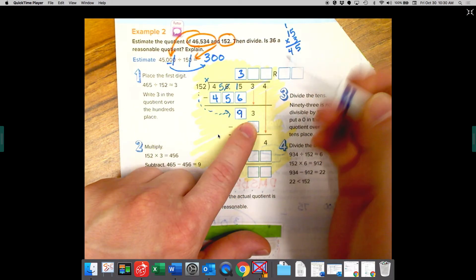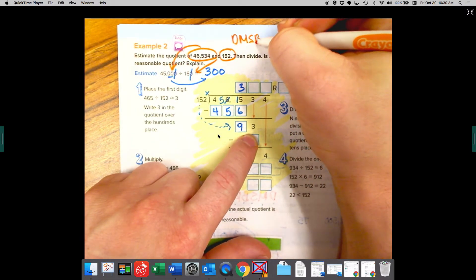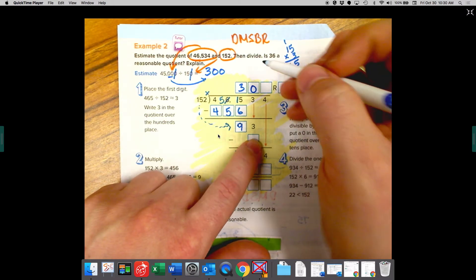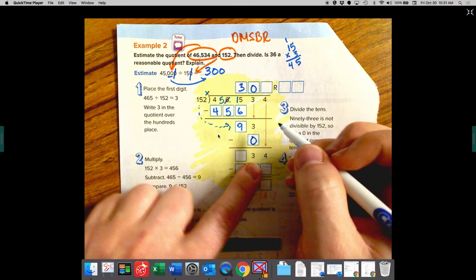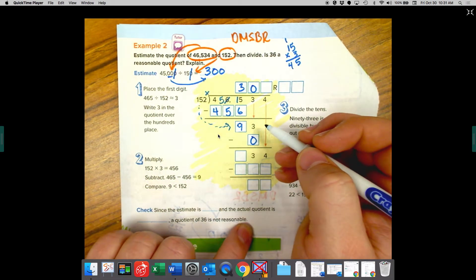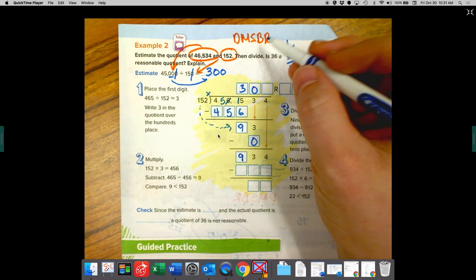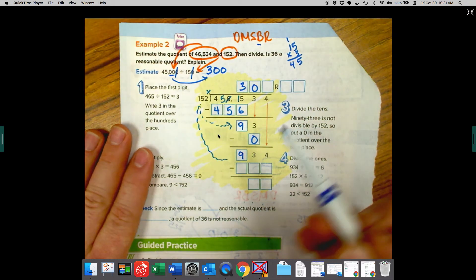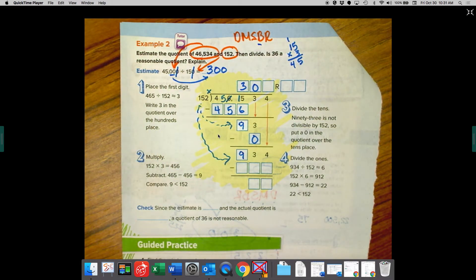So we're left with 93. So now we ask ourselves, does 152 fit into 93? Because we're trying to remember, does McDonald's sell burgers raw? It doesn't work. So we're going to have to fill that in with a zero to give us a zero here. So it does not work. We added our zero. Zero times 152 is zero. So now we have 93 minus zero, which is 93. They have 93. They remembered the B for bring down, which is four. Now we got to ask ourselves, how many times does 152 fit into 934?